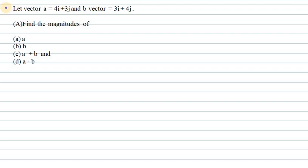Let's start with question number 4. It says let vector a equals 4i plus 3j cap and b vector equals 3i cap plus 4j cap. Now we need to find the magnitudes of a and b.